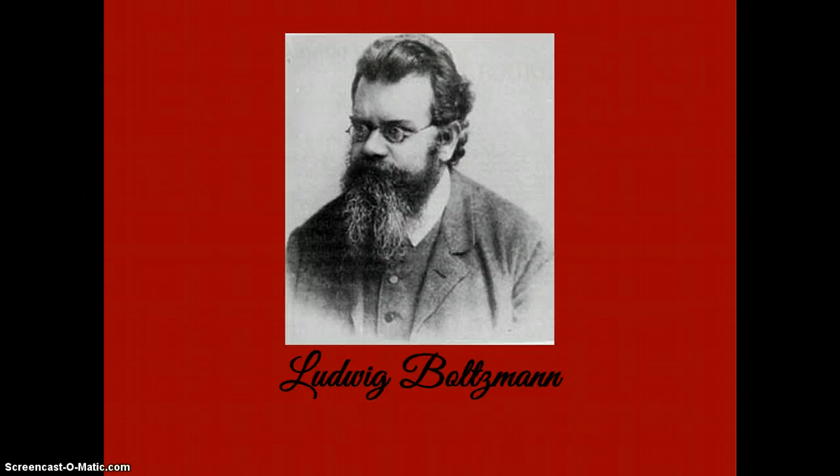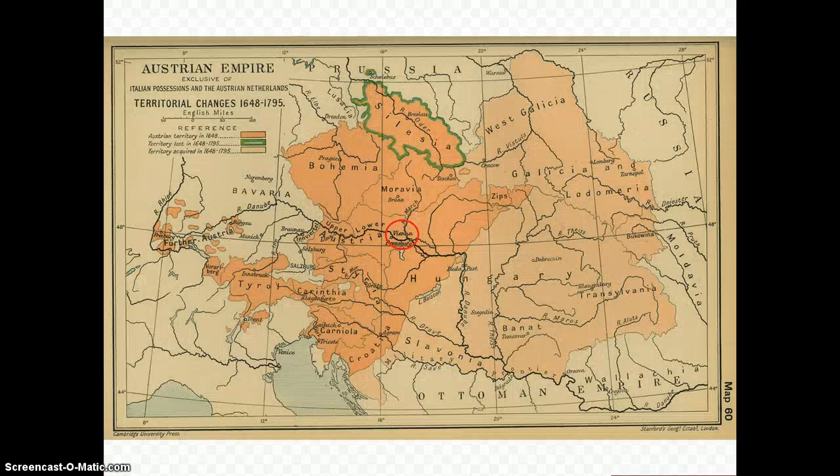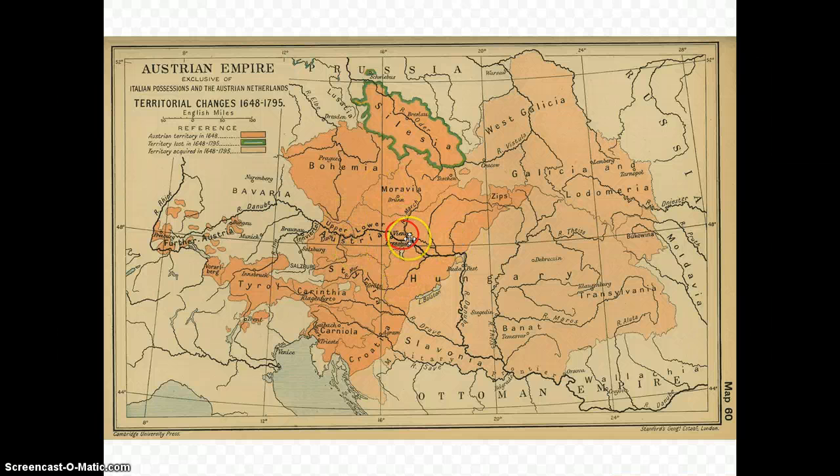Ludwig Boltzmann was a 19th century physicist who laid the foundations of what is now known as statistical mechanics. Boltzmann was born on February 20, 1844 in Vienna, Austria.